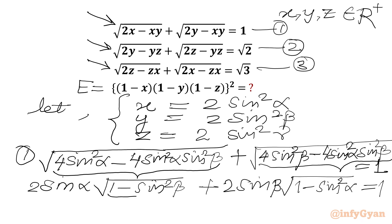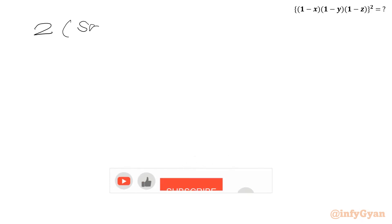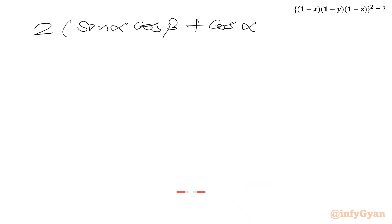Now 1 − sin²β is cos²β, and √(cos²β) gives cos β. So we write 2 sin α cos β plus 2 sin β cos α equals 1. Taking 2 as common, we write 2(sin α cos β + cos α sin β) equal to 1.